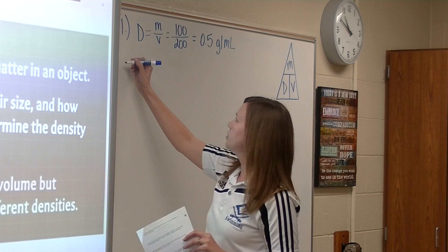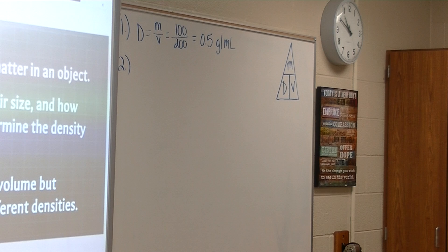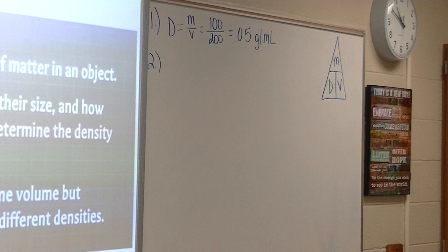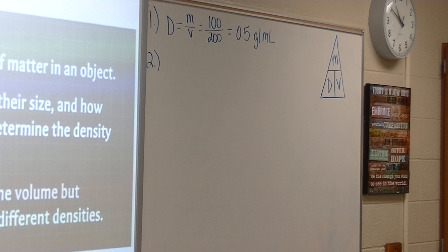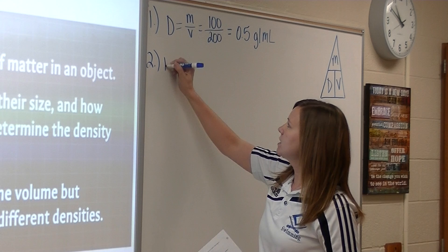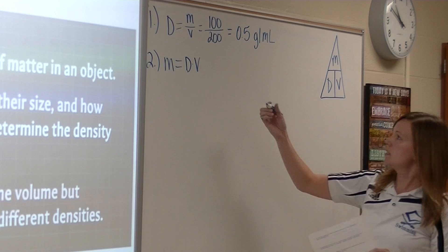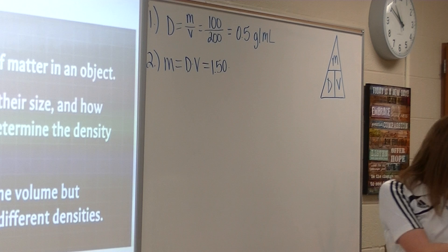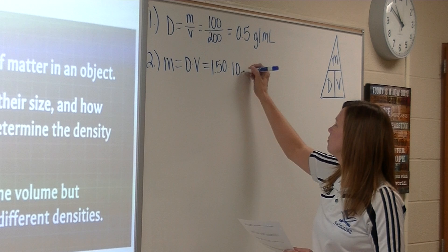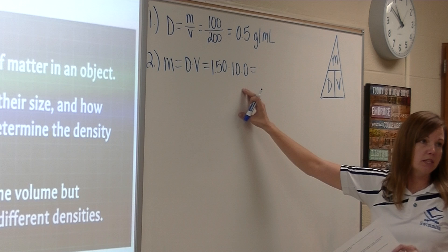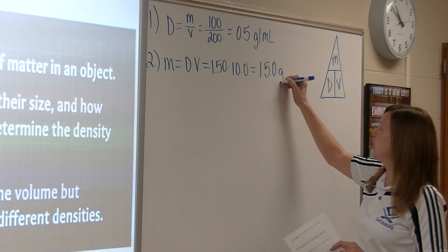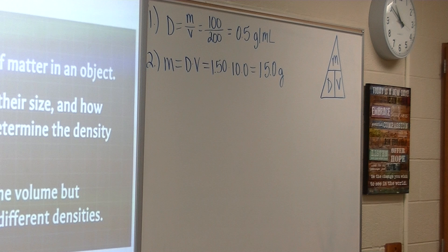Number two: a solution has a density of 1.5 grams per milliliter. How many grams are needed to obtain 10 milliliters of solution? They're asking for how many grams, so we're solving for mass. The formula for mass is mass equals density times volume. Our density is 1.50 and our volume is 10 milliliters. So 1.5 times 10 gives you 15 grams. We're solving for mass, so the units will be in grams — 15 grams.